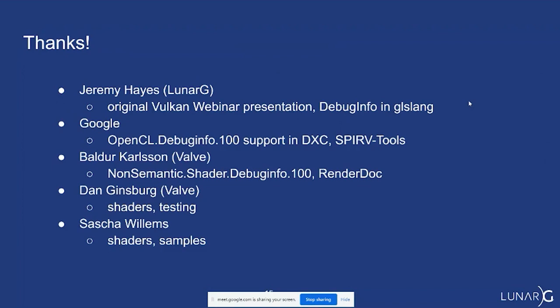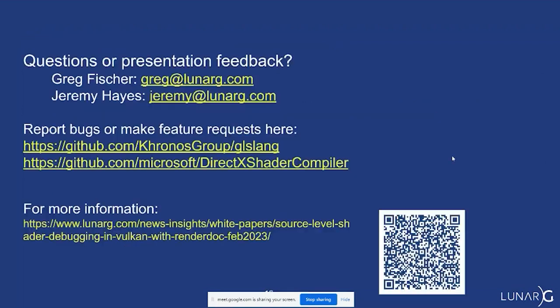A quick thanks to Jeremy Hayes at LunarG — he actually prepared the initial presentation and we worked together on adding this capability to glslang. Thanks to the Google team for their work adding this to DXC and support in SPIR-V tools for debug info. Thanks to Baldur for being Baldur, and also Dan Ginsburg and Sascha. You can find my contact information here. Probably just bring issues up to the glslang or DXC repos directly and we'll catch them there. We've also got a white paper that describes this.